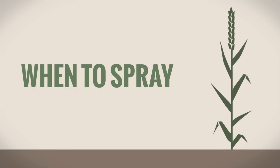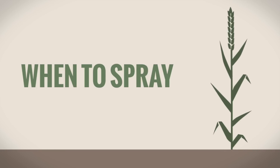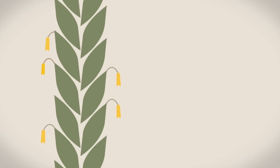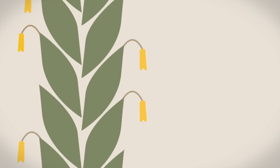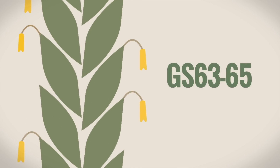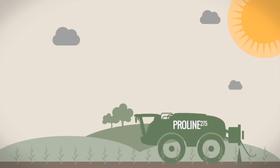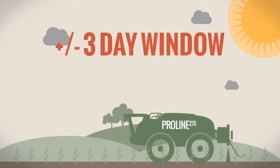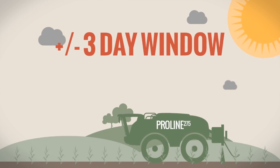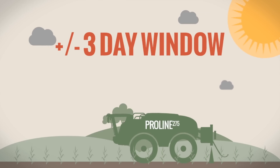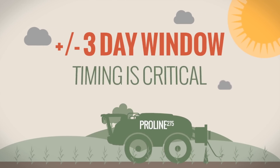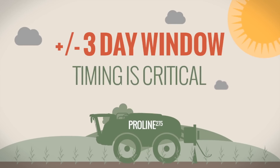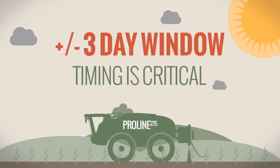When to spray. To get the most out of your T3, look to spray at mid-flowering between GS 63 to 65, when the flowers are open and the anthers are extended in the main canopy. With most T3 sprays only having plus or minus 3 days activity against the disease, getting your timing right to ensure maximum protection for your crop is important.